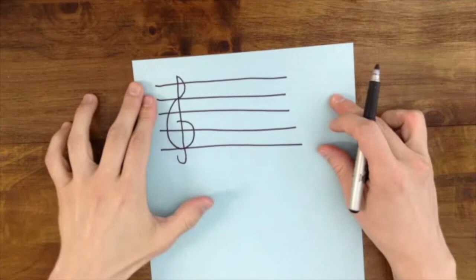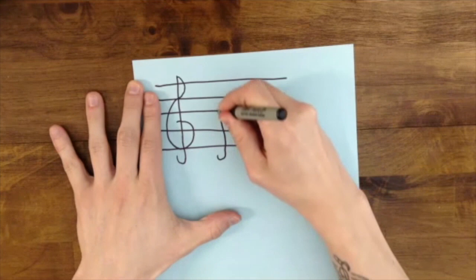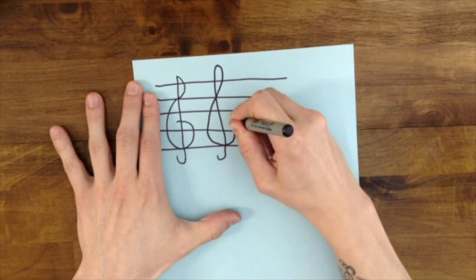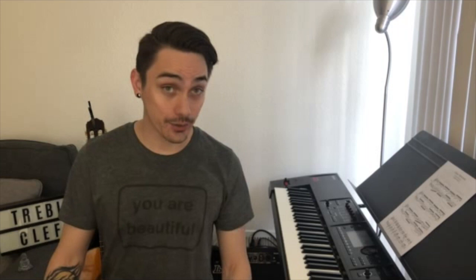And you can do it in one movement if you like. I like to start mine from the bottom. One movement, we have the hook, to the top, around to the fourth line, down to the bottom, and bullseye. There you go, treble clef.